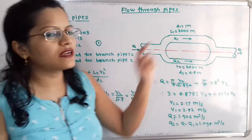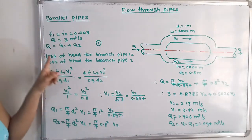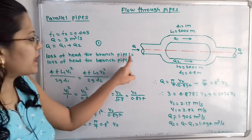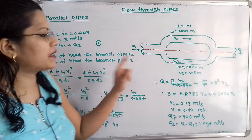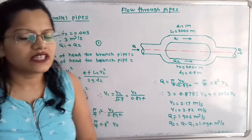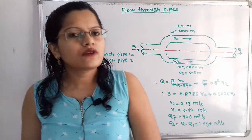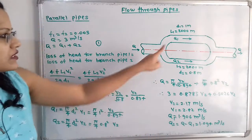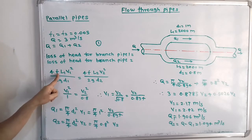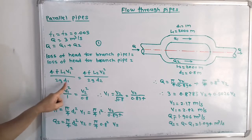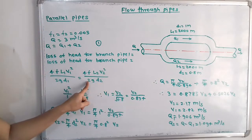For parallel pipes, the loss of head in both branches must be equal. So the loss of head for branch pipe 1 equals the loss of head for branch pipe 2. Using the Darcy-Weisbach friction head loss formula: 4f·L1·V1²/(2g·D1) = 4f·L2·V2²/(2g·D2).